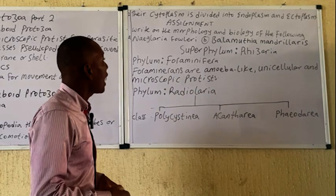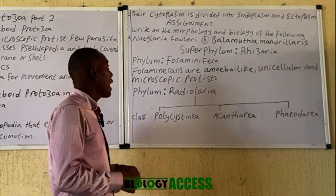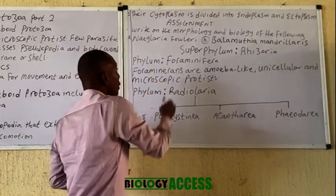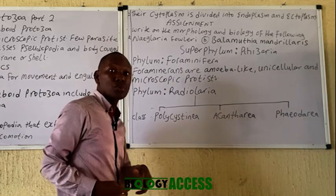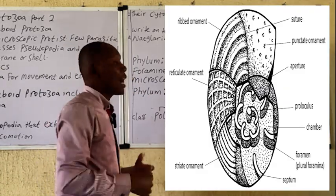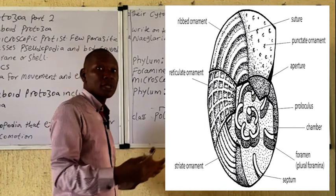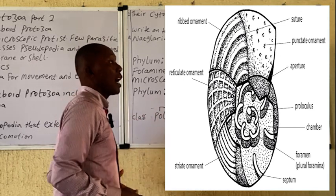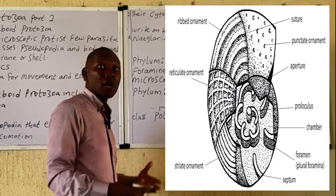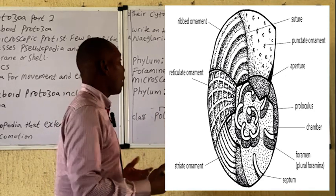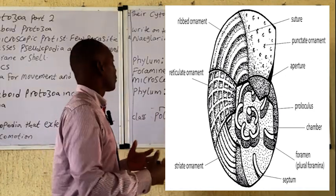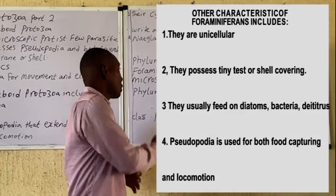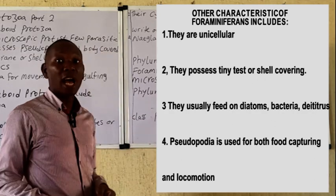Another group under the amoeboid protozoa is the super-phylum Rhizaria, which comprises the foraminiferans, the radiolaria, and the cercozoa. The foraminiferans are amoeba-like unicellular protists. Some of them possess a secreted shell or test, and in some cases they are referred to as shelled amoeba. They possess many species, and microscopy diagrams of various foraminifera are displayed on the board.